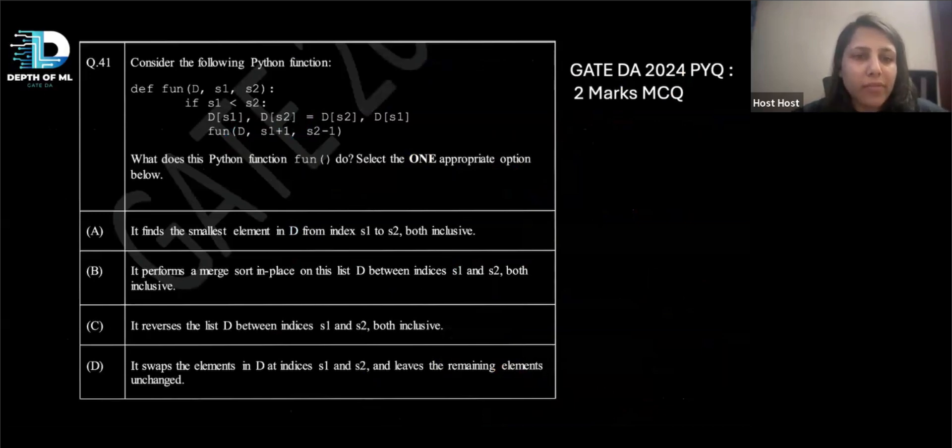So they have given you a Python function. It's taking some D, S1 and S2. And something is happening over here. And they're saying what does this Python function do? Select one appropriate option below. So you have to select only one option from below. So it's an MCQ, not an MSQ.